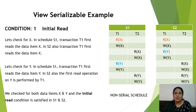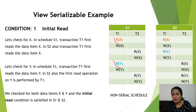Condition 1 — Initial Read. This condition says that in schedule S1, if transaction T1 initiates a read operation on X or Y, then in schedule S2 also, transaction T1 should initiate the same read. In schedule S1, transaction 1 has initiated read on X and read on Y. In schedule S2 as well, the read operation on X and the read operation on Y are both initiated by T1. So this condition is satisfied in both S1 and S2.